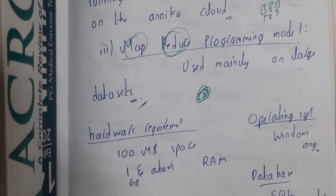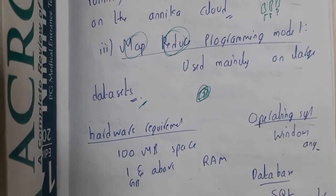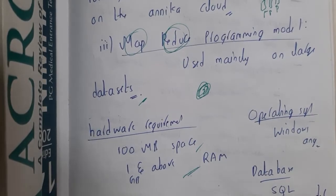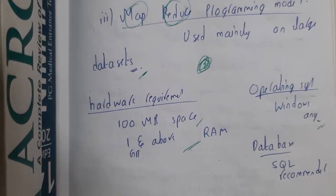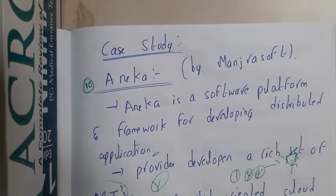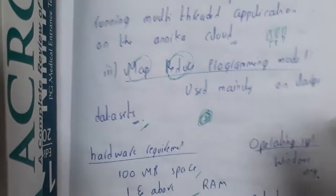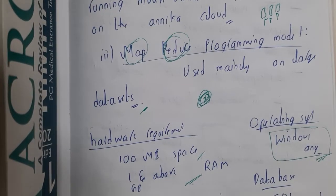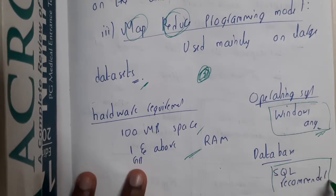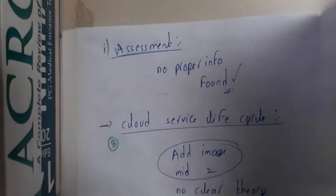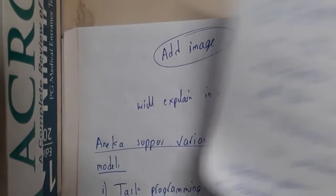The hardware requirements: the whole Aneka application takes around 100 MB of space, a minimum of 1 GB RAM is enough, so it is quite an efficient application. It can run on any Windows operating system. It was developed by Manjrasoft. It uses SQL as recommended — whatever is recommended, like Oracle SQL or anything based on your requirements, it can use any of them. That is all about Aneka.